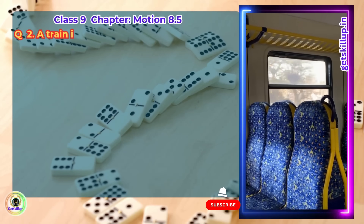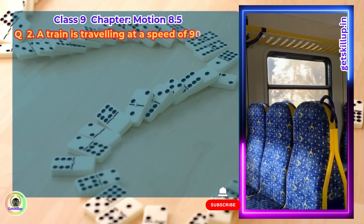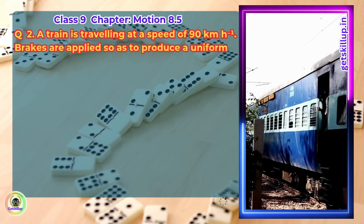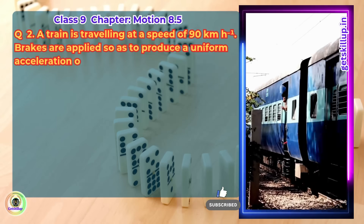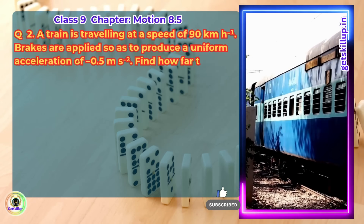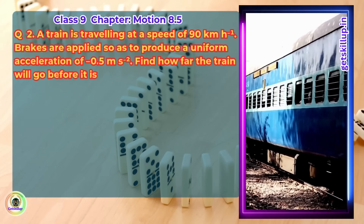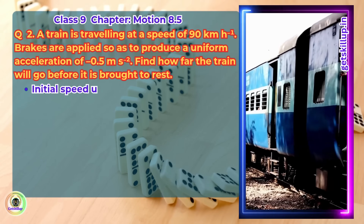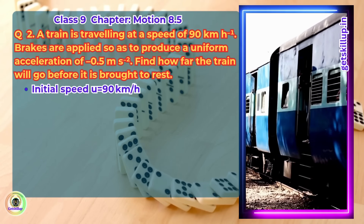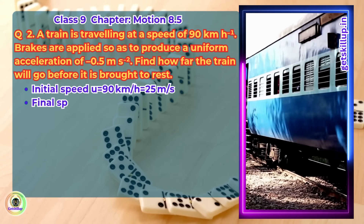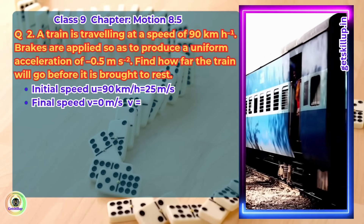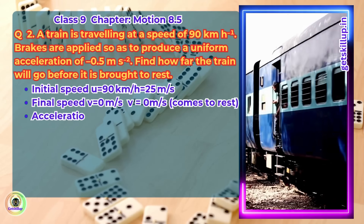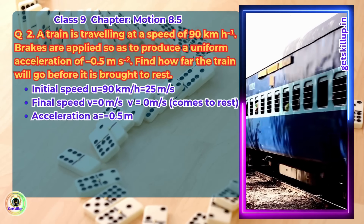Question 2. A train is travelling at a speed of 90 km per hour. Brakes are applied so as to produce a uniform acceleration of minus 0.5 meter per second square. Find how far the train will go before it is brought to rest. Answer. Given: initial speed u equals 90 km per hour which is equal to 25 meter per second, final speed v equals 0 meter per second, acceleration a equals minus 0.5 meter per second squared.